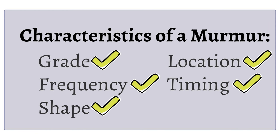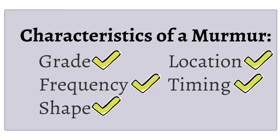We describe murmurs in several ways. The characteristics that define a murmur include intensity or grade, frequency, timing, shape, location, and radiation.